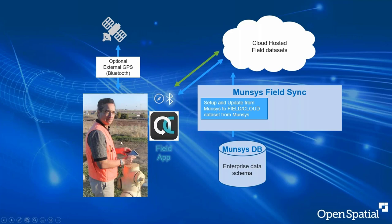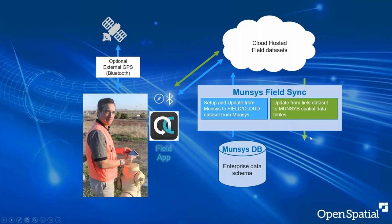When a person captures info in the field, they can edit attributes, move points — literally edit geometry. For example, if a hydrant shows in a different position on the app versus where it is on the ground, you can click it and move it. You can also take photos. All of that gets uploaded to the cloud once you connect. Munsis FieldSync acts as a listener: the cloud contains flags for change sets, and when a change is made, FieldSync detects it and can pull that data down.